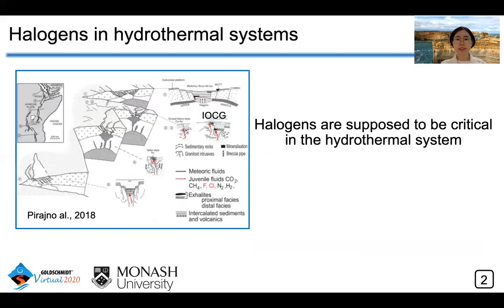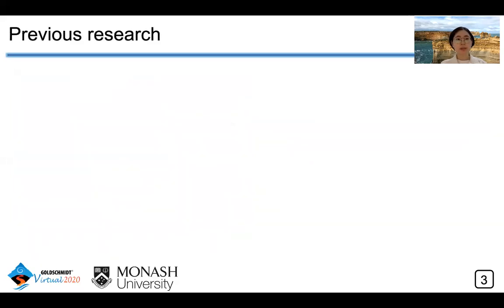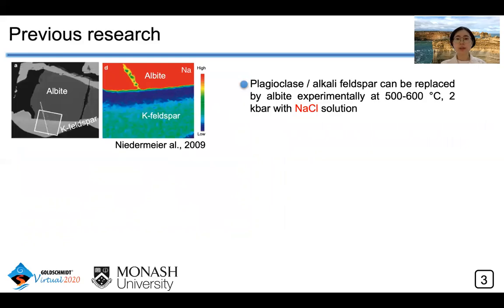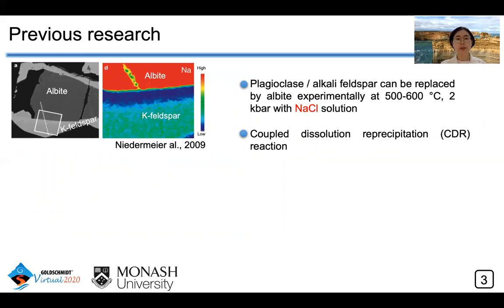In IOCG systems, halogens such as fluorine and chlorine are supposed to be critical in the hydrothermal system. Previous research has found that both plagioclase and alkali feldspar can be replaced by albite under experimental conditions with sodium-chloride solution. This is a coupled dissolution-reprecipitation reaction, with the parent phase pseudomorphically replaced by the product phase.